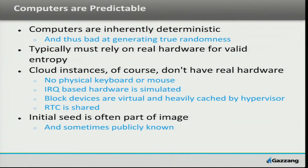So typically we actually do rely on hardware — real hardware — to give us valid entropy. In terms of our laptops, desktops, personal computers, we have real hardware associated with them. We've got a physical keyboard, a mouse, a microphone, and nowadays a camera. All of these inputs can grab environmental information that provides entropic input into the system.